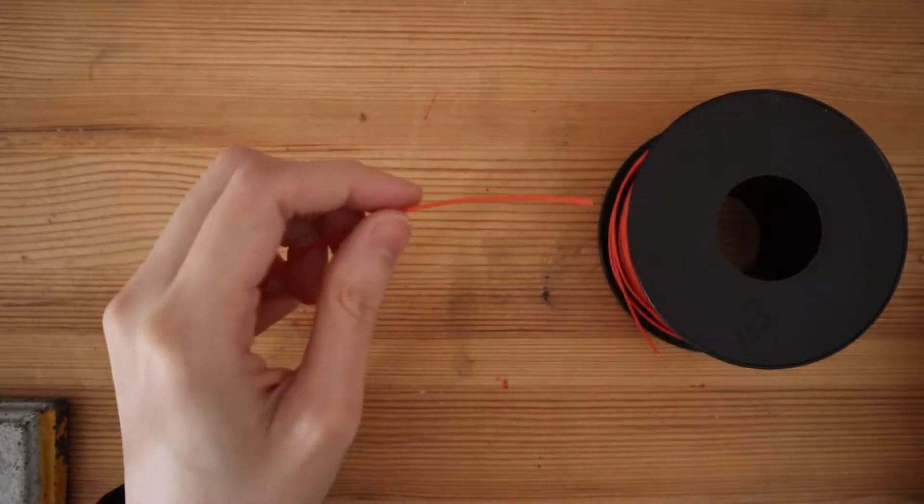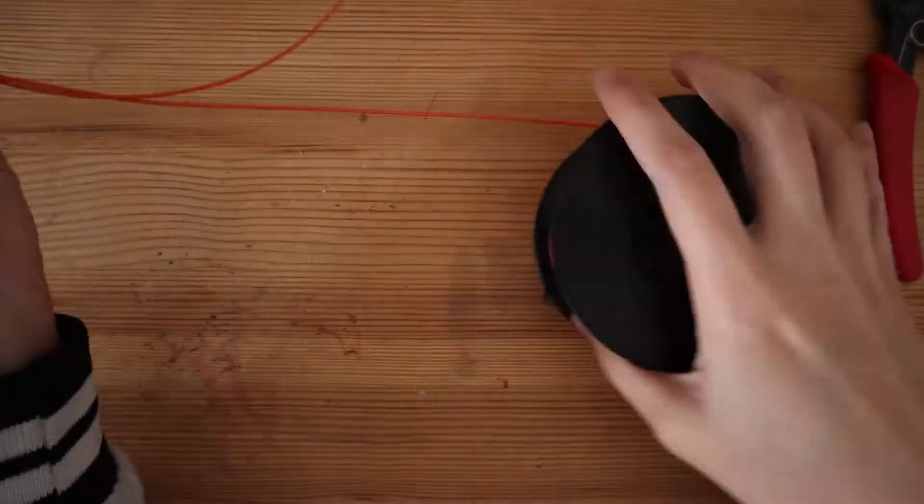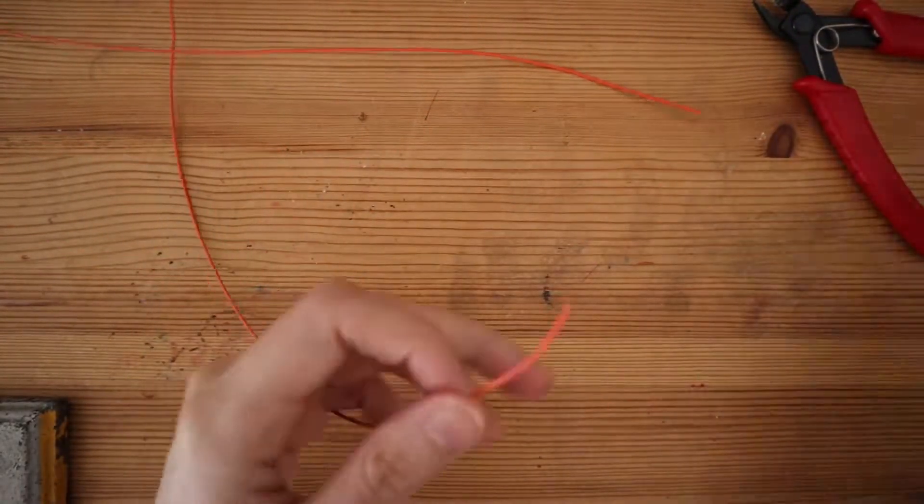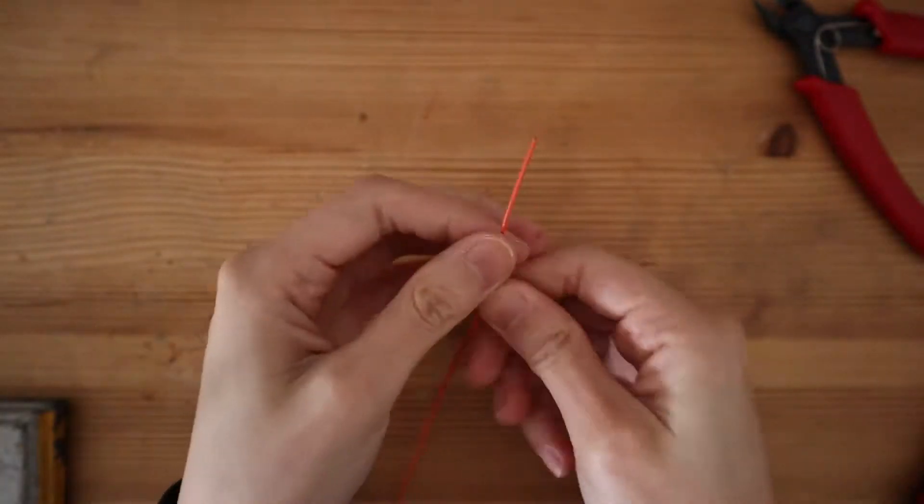Cut two lengths of wire around 15 centimeters long. Strip both ends of the two wires, and these will be used to connect our motor to the power source.